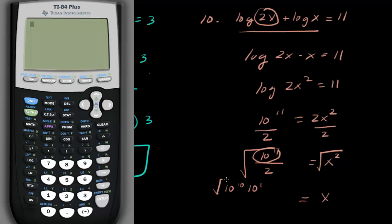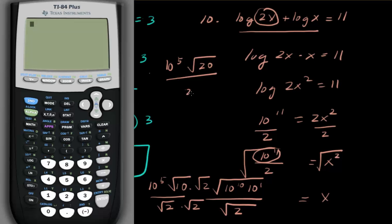So we can go ahead and take the 10 to the 5th out, and we have a 10 and a square root of 2. I'm going to go ahead and rationalize the denominator. So I have 10 to the 5th, square root of 20, over 2.